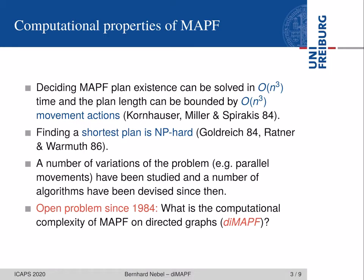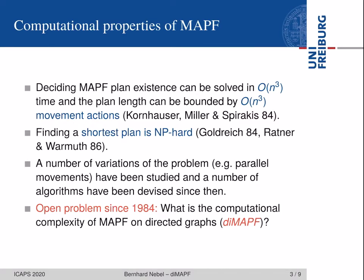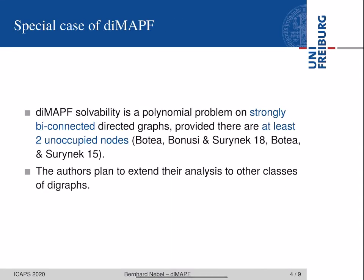The interesting thing is that there is an open problem: namely, what is the computational complexity of multi-agent pathfinding when you move to directed graphs, which is a generalization of the former problem. We will call that problem DIMAPF. There is a partial answer for a special case of directed graphs: DIMAPF solvability is polynomial when we have strongly bi-connected directed graphs, provided that there are at least two unoccupied nodes. The authors also planned to extend their analysis to other classes of digraphs, but as far as I know they haven't done so, leaving a big gap between these special directed graphs and the general case.